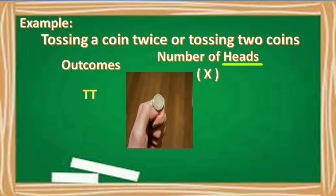Or sa unang coin, pag tinoss natin, ang lumabas ay tail. Then sa pangalawang coin, nung tinoss natin, tail pa rin yung lumabas. So we have an outcome, tail, tail. So kung ang random variable natin ay number of heads, ano yung magiging value natin dito sa first outcome? Zero. Tama. Bakit zero? Dahil walang head na lumabas.